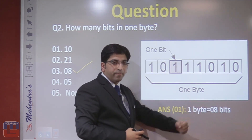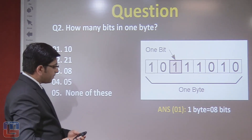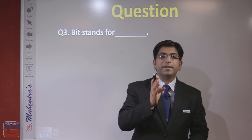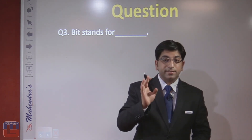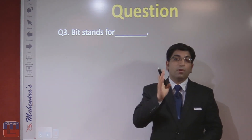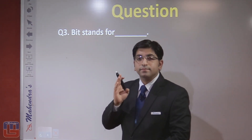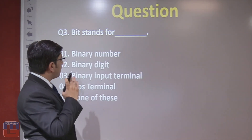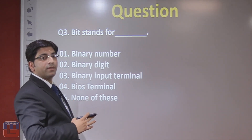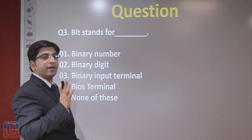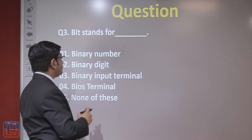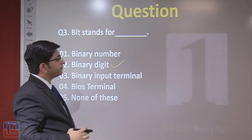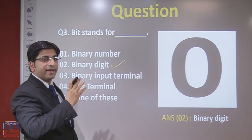Next question: bit stands for — what is the full form of bit? Bit is the most smallest memory unit. The options are binary number, binary digit, binary input terminal, bios terminal, or none of these. Bit stands for binary digit, so the right answer is the second one: binary digit. This is shown as 0 or 1.